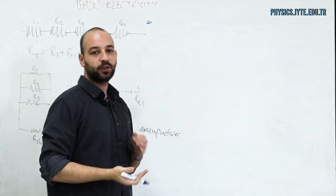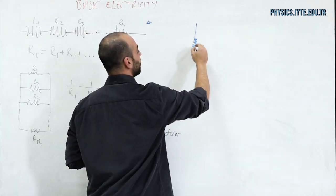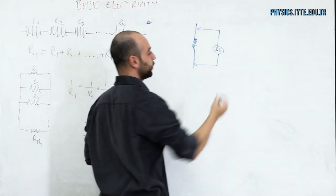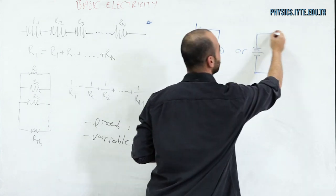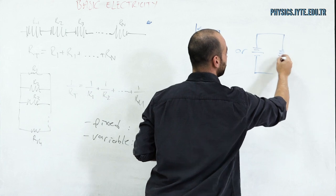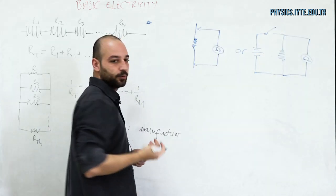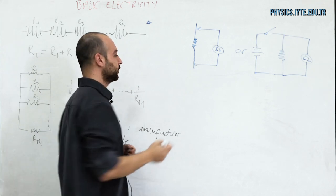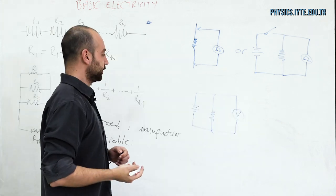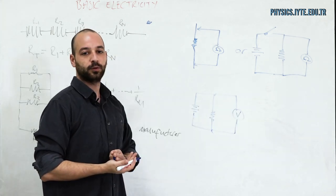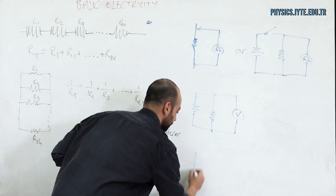If you want to measure the ohmic value of a resistor, you use an ohmmeter. While using the ohmmeter, you must disconnect the power source from the circuit in order not to damage the meter. If you want to measure voltage, you use a voltmeter in parallel connection. If you want to measure current, you use an ammeter in series connection.